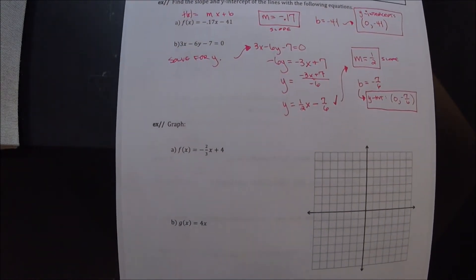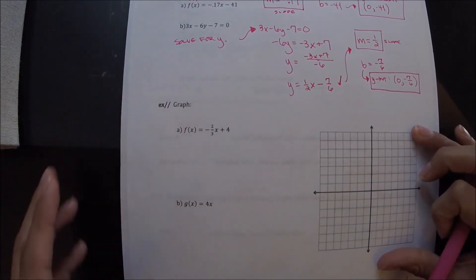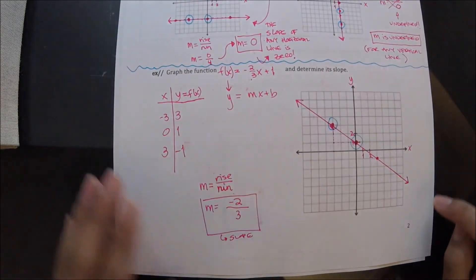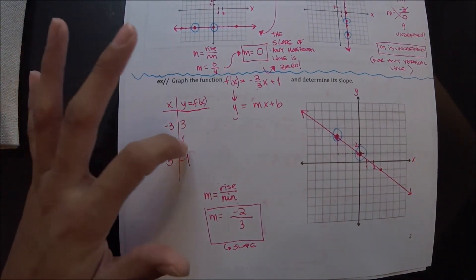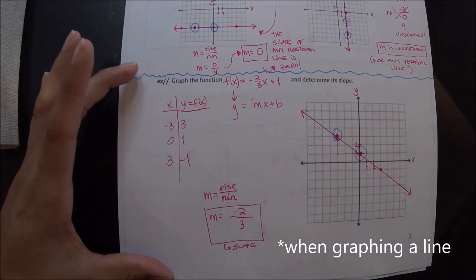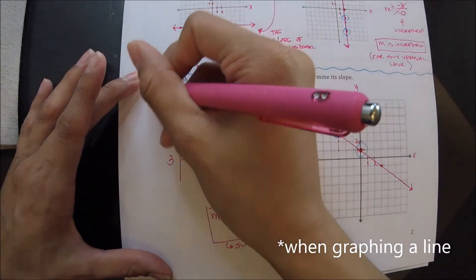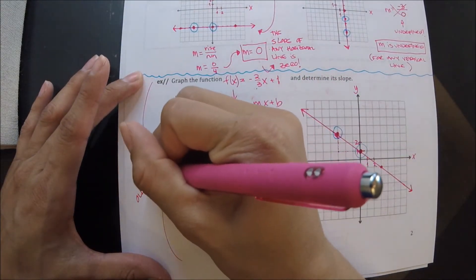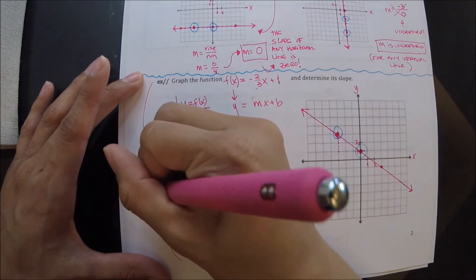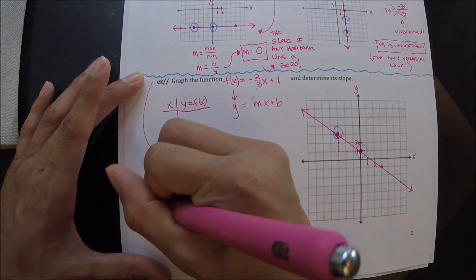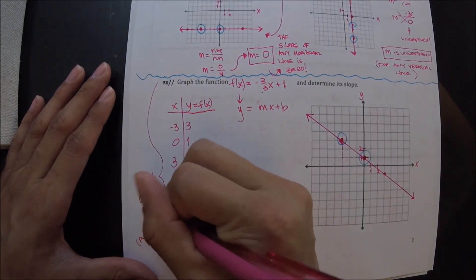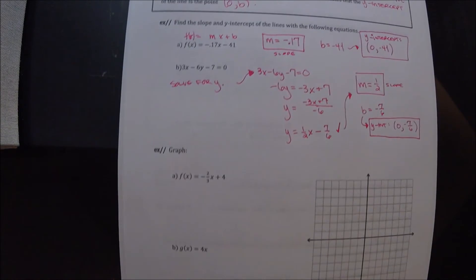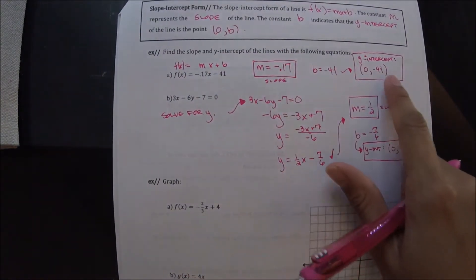Now let's graph. We're going to do this graph differently than how we did the one on the bottom of page 2. From here on out, we don't need to plot points anymore — that was the old way to graph a line. We're going to use the fact that we know how to find the slope and the y-intercept.